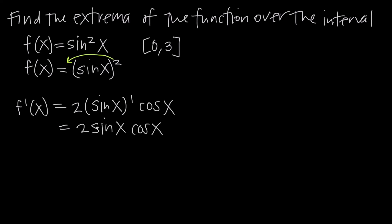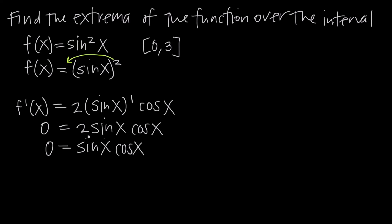To find critical points, we set the derivative function equal to zero. Dividing both sides by 2 gives us 0 = sine x times cosine x. Just like using the zero product theorem, we have two factors — sine of x and cosine of x — so we can set each individually equal to zero, because if either factor is zero, the entire right-hand side is zero.